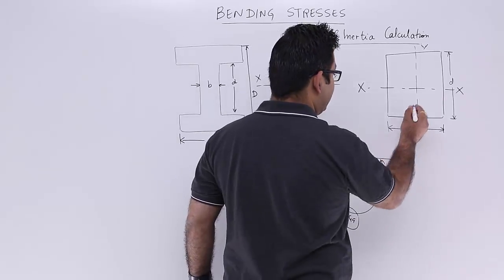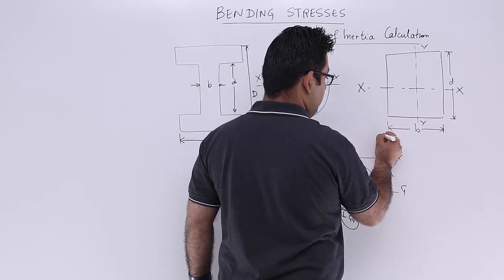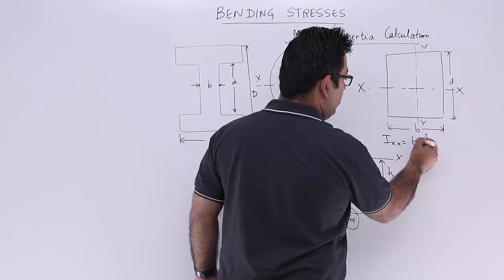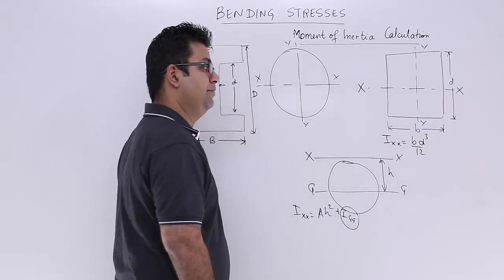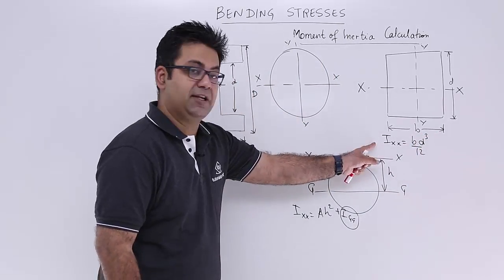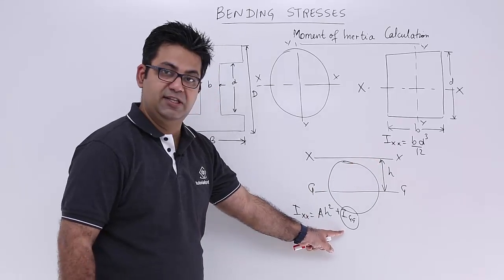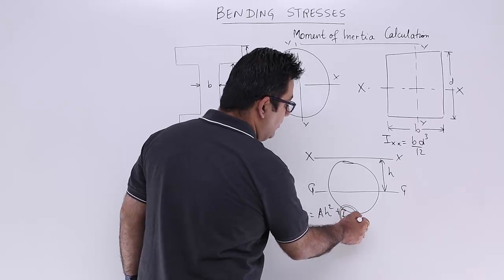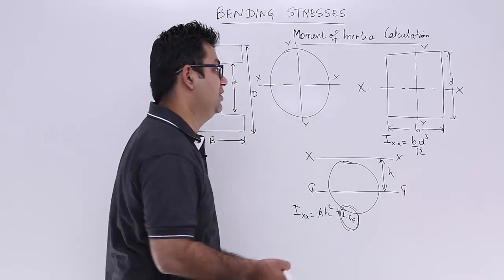So Ixx is equal to b into d cube by 12. So this is the centroidal axis. Don't confuse it with gg over here, because this is representing the moment of inertia about the centroidal axis.